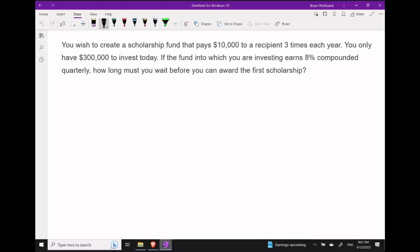Notice that we're dealing with a perpetuity, and in fact, a perpetuity due, because we're going to award that first scholarship right away. We know that the present value of a perpetuity due is the payment divided by i plus the payment.